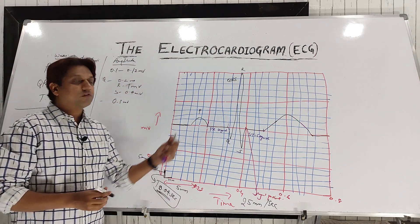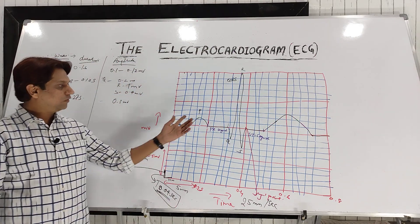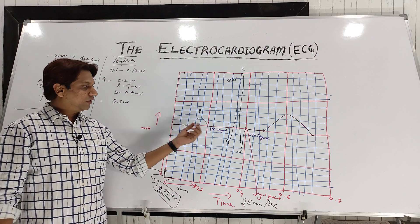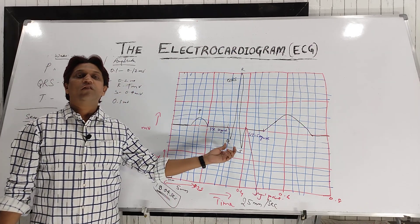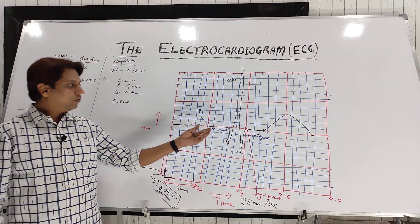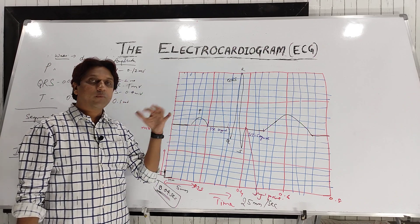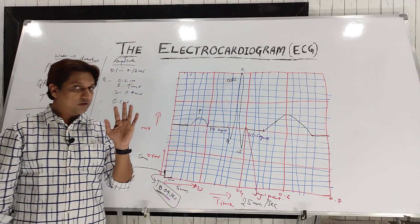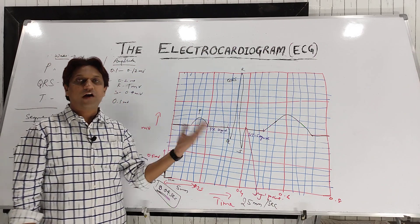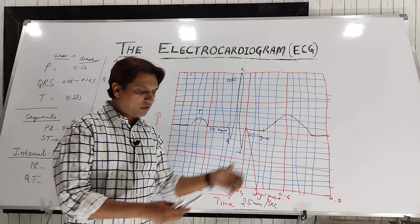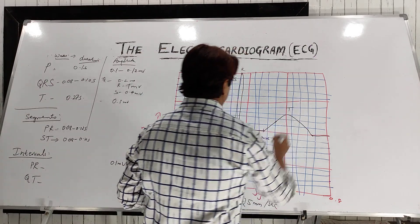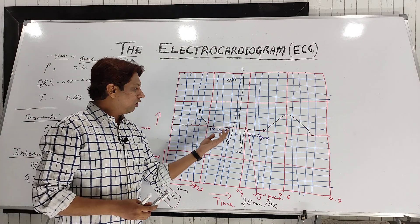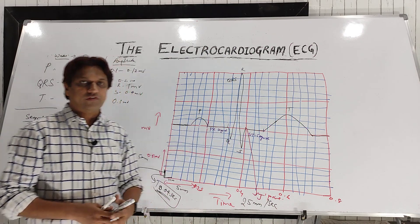To revise: the P wave represents atrial depolarization; the QRS complex represents ventricular depolarization — and at the same time atrial repolarization also occurs, but since the ventricular depolarization current is very strong, the atrial repolarization wave is masked; the T wave represents ventricular repolarization. So you now know the normal duration and amplitude of each wave.